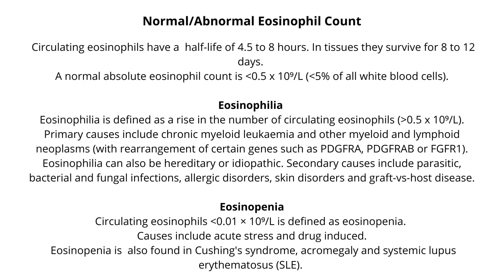Eosinophils have a circulating half-life of 4.5 to 8 hours. In tissues they survive for 8 to 12 days. A normal absolute eosinophil count is less than 0.5 × 10⁹ per liter.